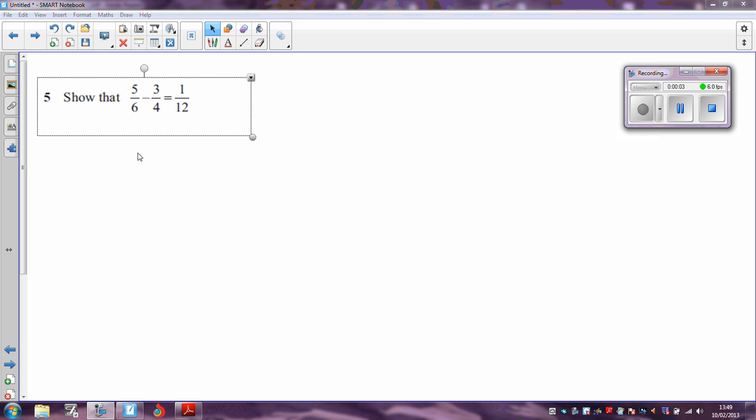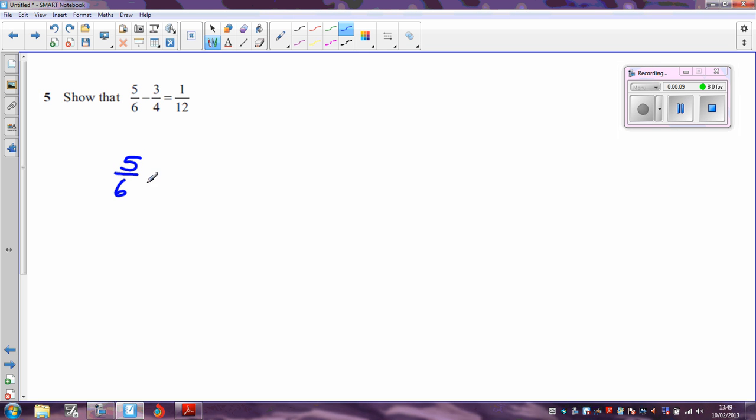To get full marks here, you need to start with the left-hand side and make it carefully into the right-hand side. So first of all, I'm going to write 5 sixths minus 3 quarters.